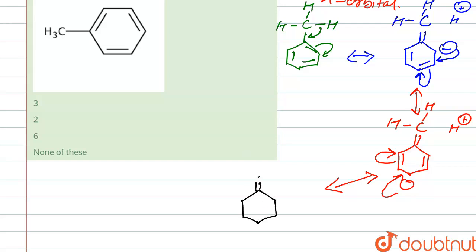In the third structure, we have a double bond carbon attached with two hydrogens and a positive charge here. The double bond shifts, a negative charge is formed, and this negative charge becomes an additional double bond, giving us the third hyperconjugation structure.